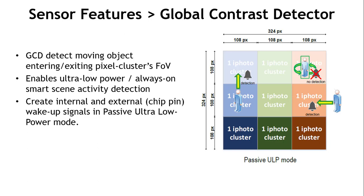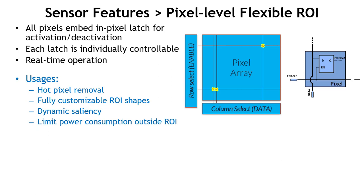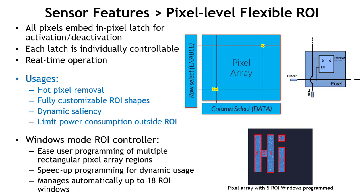From this activity detection, the sensor can wake up itself or create wake-up signals to the broader system to activate the processor. There is also a very flexible region of interest that can be programmed to remove defective pixels from the stream, define fully customizable ROIs, and move them around in real time for dynamic salient region programming, managed by a dedicated on-chip ROI controller.